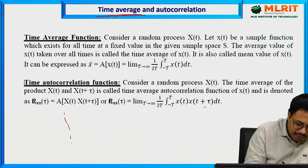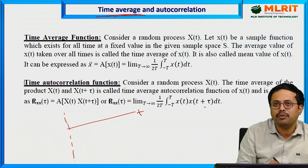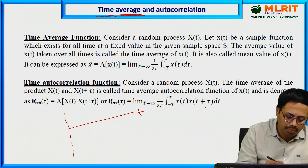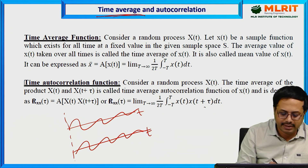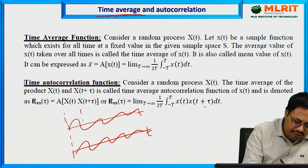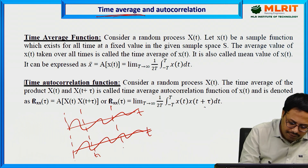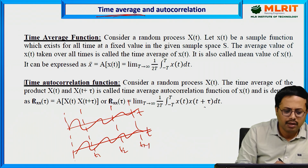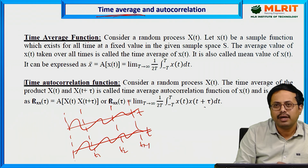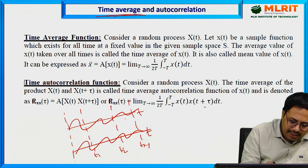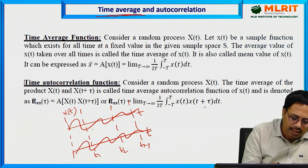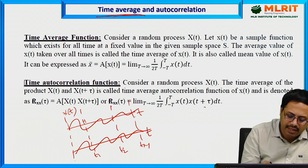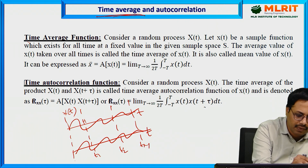Time average means, for example, if you are taking noise in a particular wireless channel for today and for tomorrow, considering two different noise instances appearing in the wireless channel, you take two different time instances t1, t2, or up to tn. Time average function is taking a particular random process x(t) and considering all time instances from t1 to tn to calculate the average — that is called time average.